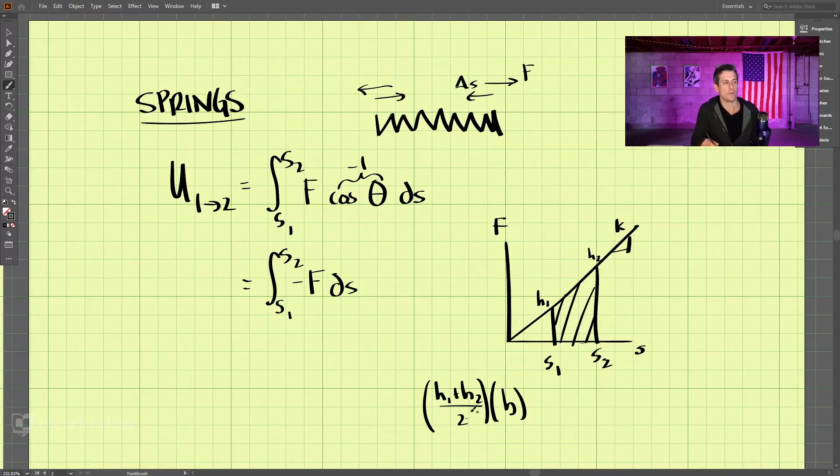So we're going to apply the same formula to finding the area underneath this curve. In our case, what is h1? Well, if we know the slope is k here, it is k times s1 will be the value of f at that point. That's ks1. h2 then is ks2.